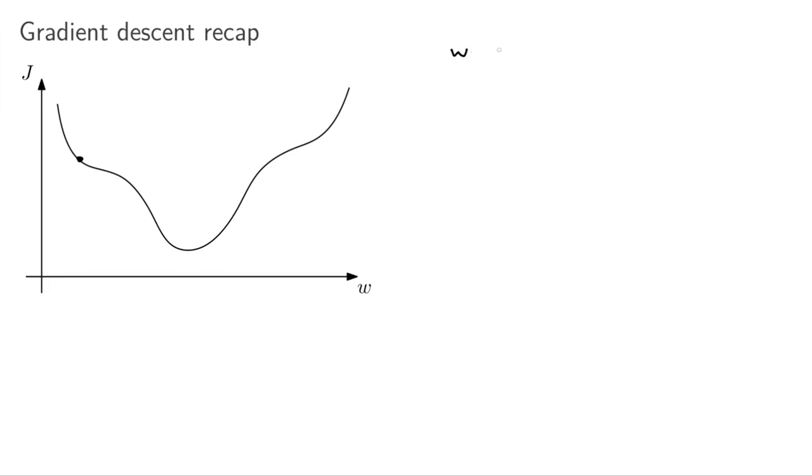And then we're going to update it. So we're going to assign a new W, which is eta times the derivative of the loss at that specific point. Eta is called the learning rate.